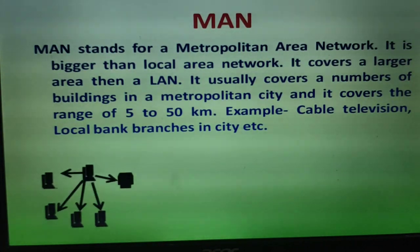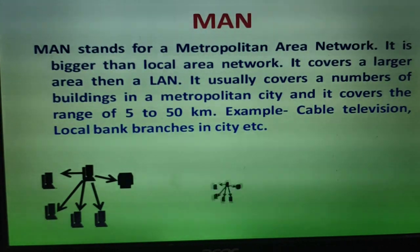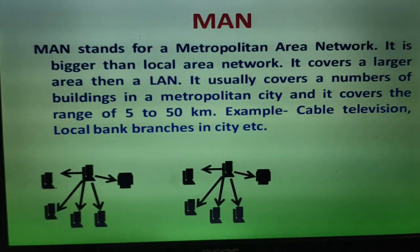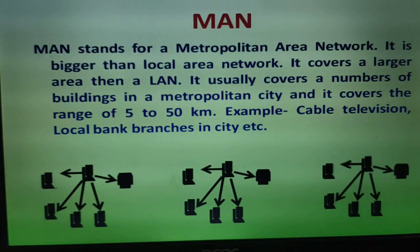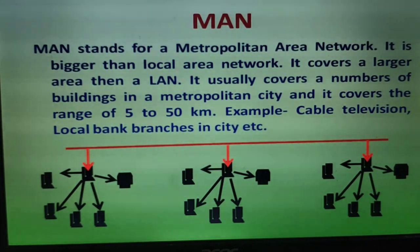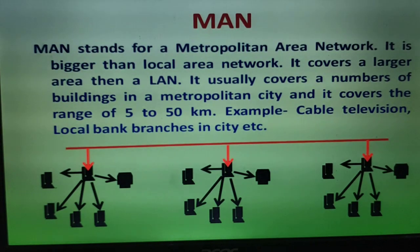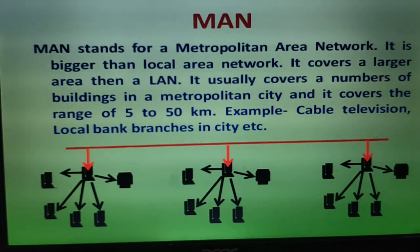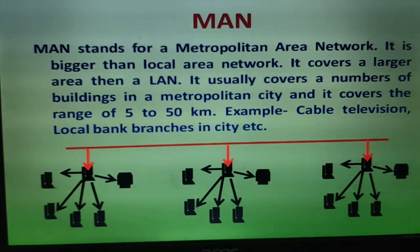For example, this is a first network at one location, this is a second network at a second location, and this is a third network at a third location — and all are connected together. This is an example of a Metropolitan Area Network. We can connect multiple LANs in a Metropolitan Area Network.